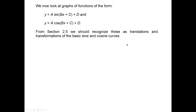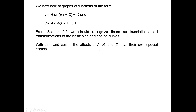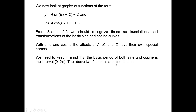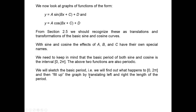With sine and cosine, the effects of A, B, and C have their own special names. D does not have a special name other than being a vertical translation up or down. The basic period of both sine and cosine is the closed interval from 0 to 2π. Tangent and cotangent have period π; all other trig functions have period 2π. We will sketch the basic period — what happens on [0, 2π] — and then fill the rest of the graph by translating left and right by the period length.